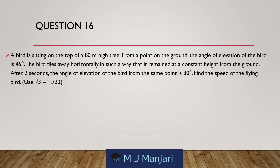Question 16. A bird is sitting on the top of an 80 metre high tree. From a point on the ground, the angle of elevation of the bird is 45 degrees. The bird flies away horizontally in such a way that it remains at a constant height from the ground. After 2 seconds, the angle of elevation of the bird from the same point is 30 degrees. Find the speed of the flying bird. Use root 3 is equal to 1.732.